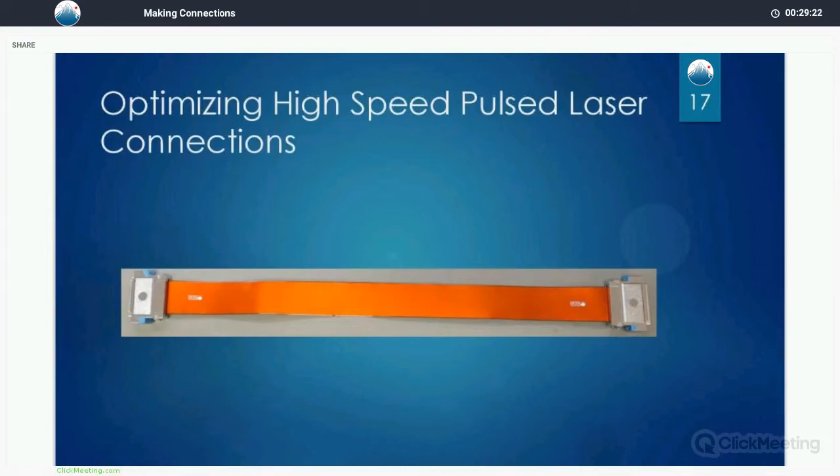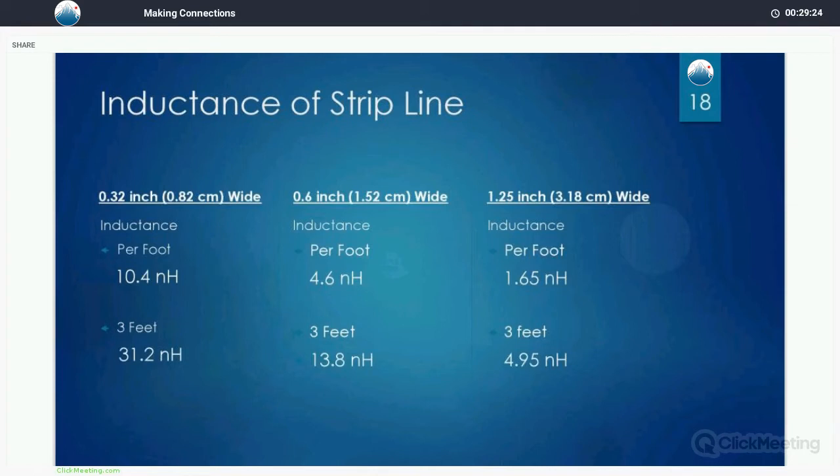Here's the answer. Strip line. This particular photograph shows a connector at each end. How about these numbers? A strip line that's 0.32 inches wide comes down to about 10.4 nanohenries per foot. Much less than the previous numbers we've had. As we widen the strip line, the numbers go down as you would expect. 0.6 inch strip line has 4.6 nanohenries per foot. Not per inch, but per foot. And finally, the wide stuff. We only have 1.65 nanohenries per foot. Nice, low inductance.